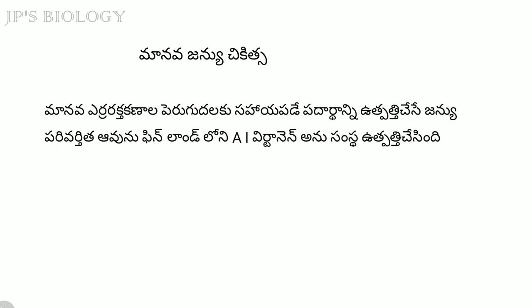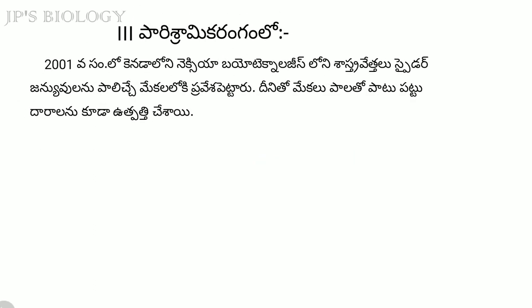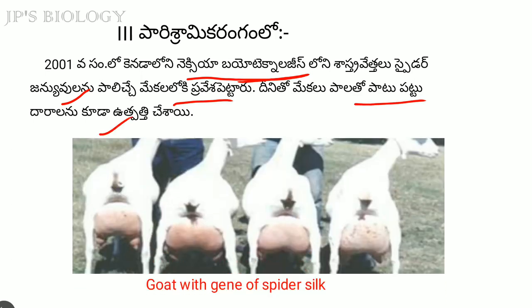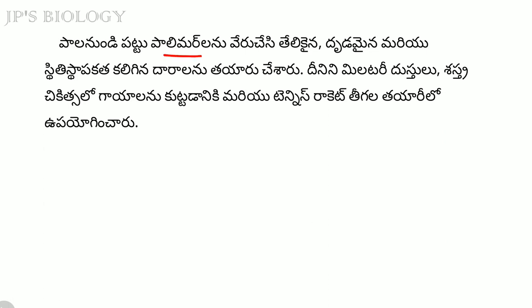We are going to talk about human beings in Finland. We are going to talk about transgenic animals and Nexia Biotechnology in Canada. We are going to talk about spider silk. In the past, the spider silk has been introduced to the genus.